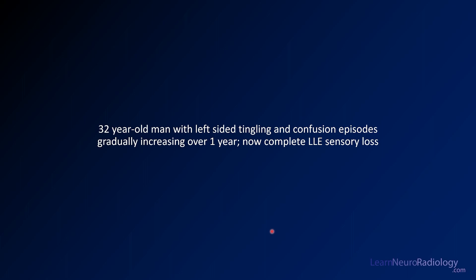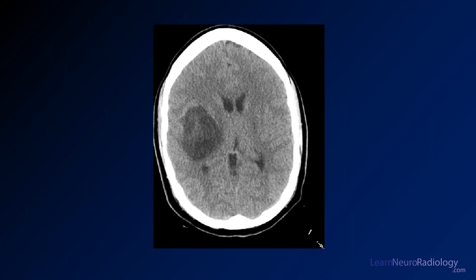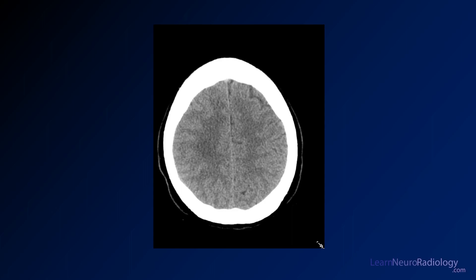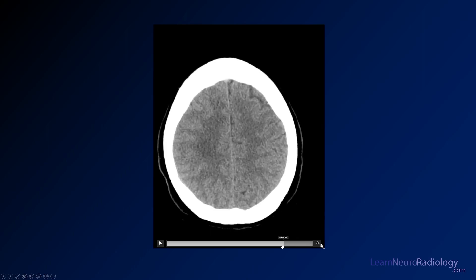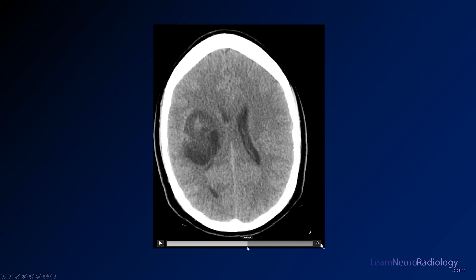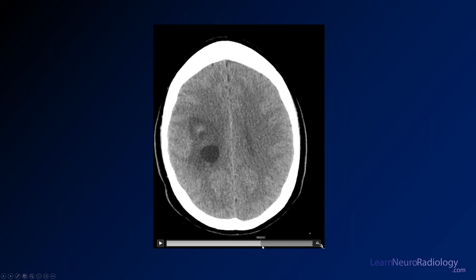Let's move on to our second case — a 32-year-old man with left-sided tingling and confusion episodes increasing over a year, now with complete left lower extremity sensory loss. Here we have a CTA to scroll through. You can see that the right cerebral hemisphere is expanded, with a kind of ill-defined mass. Some margins are pretty well-defined, others more ill-defined. In the center there's a little bit of hyperdense material — possibly calcification or blood products. Near the top there's a little cyst formation.